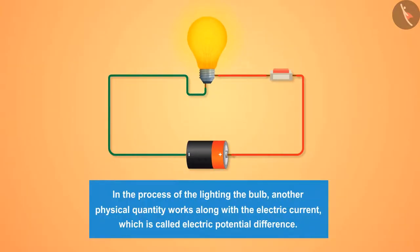In the process of lighting the bulb, another physical quantity works along with the electric current which is called electric potential difference. What is this electric potential difference? Let us try to understand this with the help of this example.